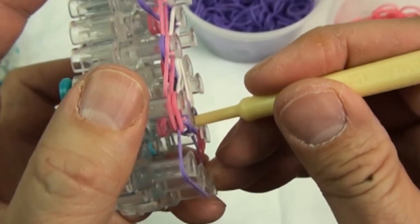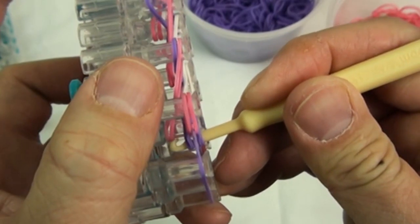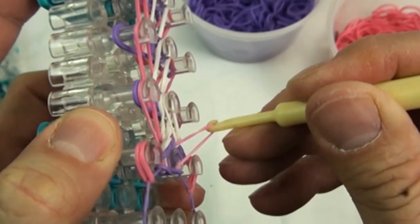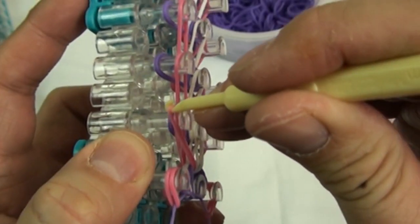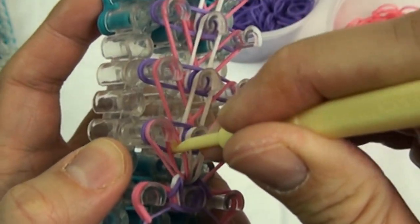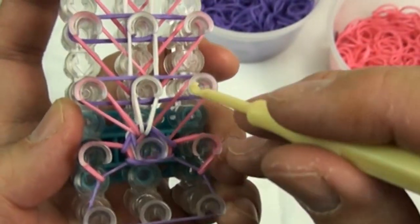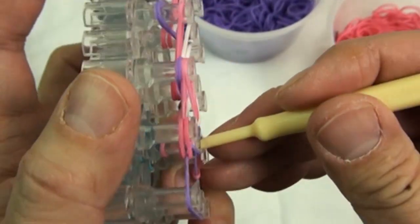Do the same for the pink rubber bands. First pick the one going to the forward left, and then pick the second pin to the forward right.